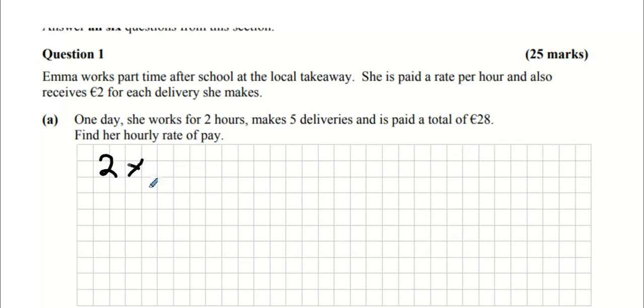Two times her hourly rate X, five deliveries, so that's 5 by 2 euro which is 10 quid. 10 quid for the deliveries equals 28 quid. Take away 10 euro, you get 2X equals 18, then divide by 2 and you get X equals 9. So she's on a rate of 9 euro per hour.